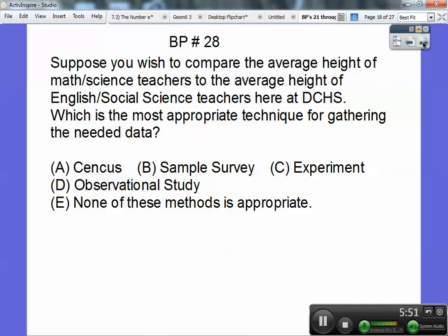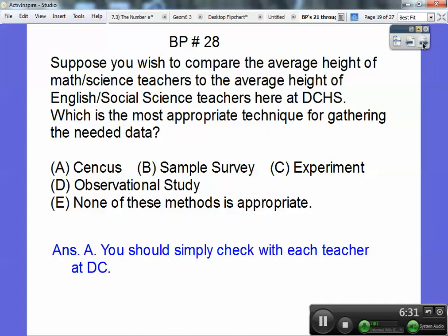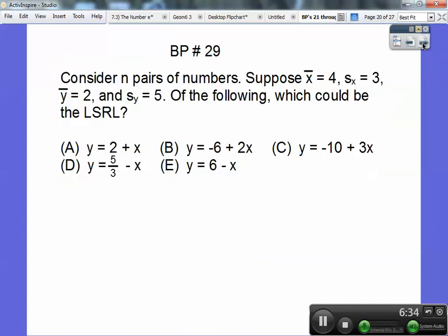Suppose you wish to compare the average height of math and science teachers to the average height of English and social science teachers here at Del Campo High School. Which is the most appropriate technique for gathering the needed data? Census would be to go collect everybody's information. Sample survey would be just a sample. It's census. Since you're just dealing with the high school, we have probably 14 math teachers and probably 8 science teachers. When it's a small number, census is the best choice. That's choice A. Just go ahead and check with all the teachers.